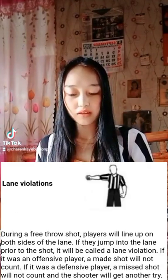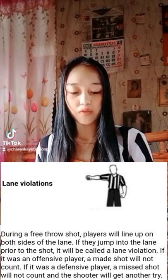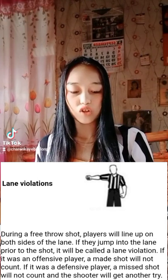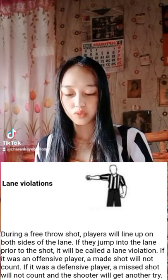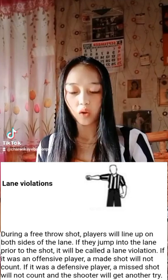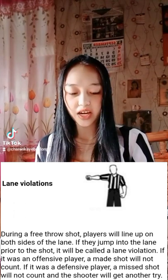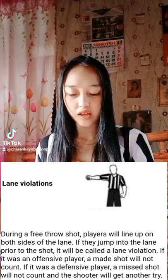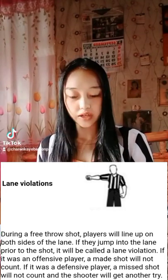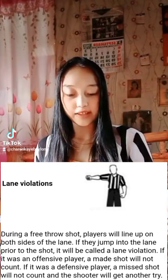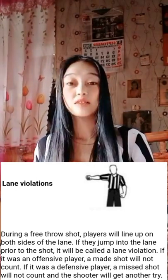Next is line violations. During the free throw shot, players will line up on both sides of the lane. If they jump into the lane before the shot, it will be called a line violation. If it was the offensive player, the made shot will not count. If it is the defensive player, the made shot will not count but the shooter will get another chance.